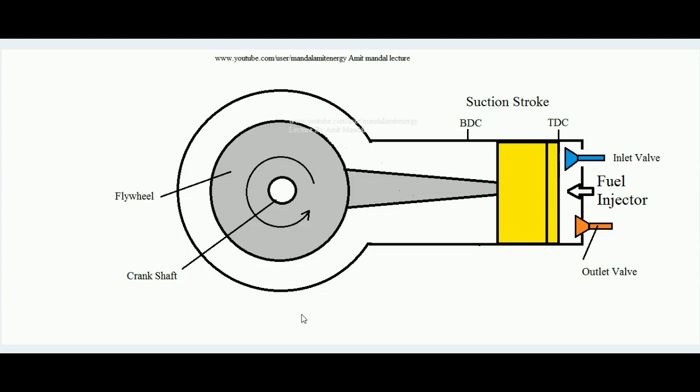Over here I am showing the indicative diagram of a CI engine. This is a cylinder, this is the piston, connecting rod, flywheel, and these are the inlet and outlet valves. I hope you all know the details of the four stroke of a four stroke CI engine.